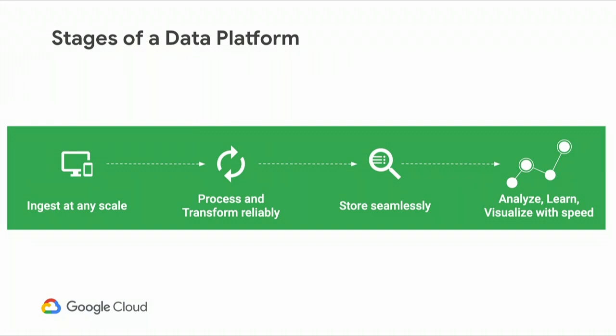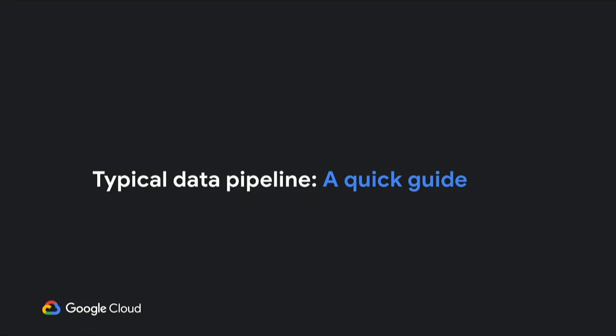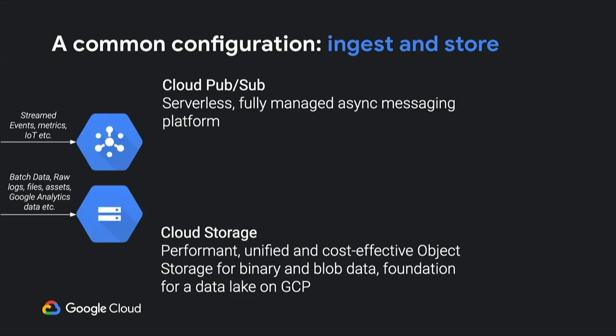That brings me to the how. This is a typical data pipeline I'm going to walk through — there are lots of different ways of doing things, but this is a common architecture. We start with streaming events coming in from IoT devices, or in this case mobile device data, and that will be written to a Cloud Pub/Sub topic.